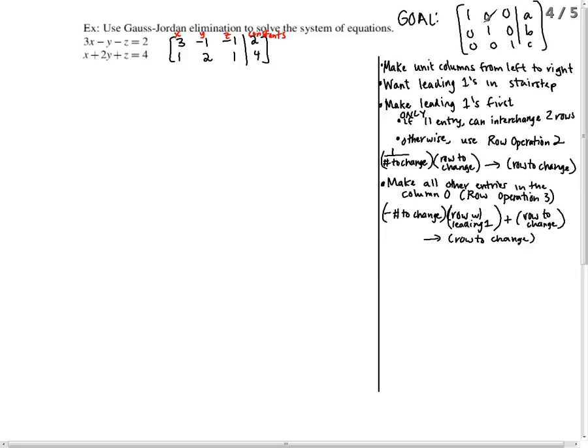We want the leading ones in a stair step, the 1,1 position, the 2,2 position, the 3,3 position, if you have something that looks just like this. It could be the 1,1 and the 2,3 if this is a 0 here, and so on. But the ones need to be in a stair step.